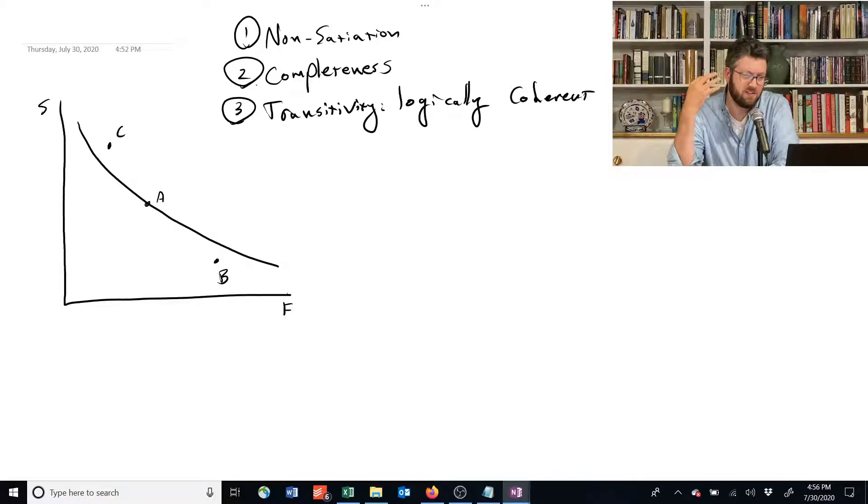So we can't just assert, using only the non-satiation rule, that it's preferred. Similarly, we can't say using just rule number one that B is worse simply because it has less shelter, even though it has more food.